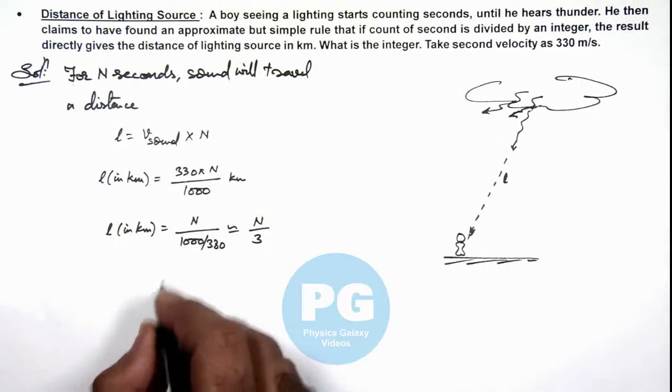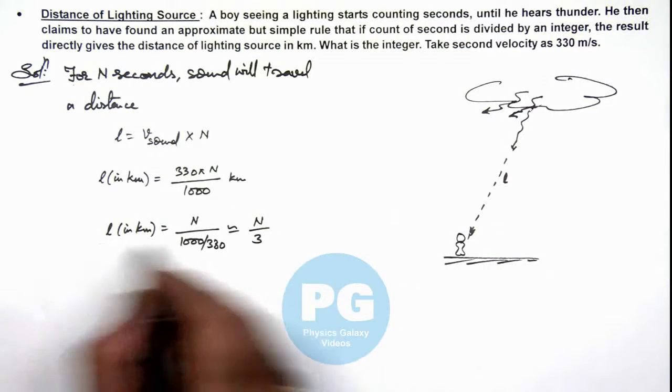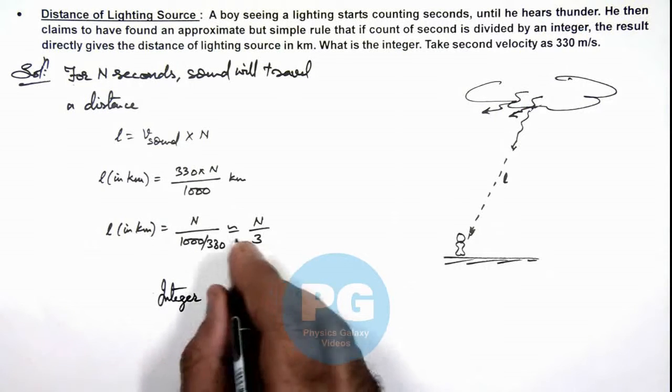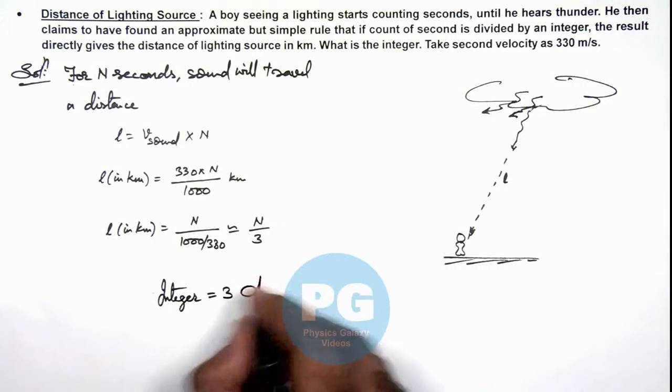So here, the integer by which when N is divided directly gives the length in kilometers is approximately equal to N by 3. So here integer is equal to 3. That is the result of this problem.